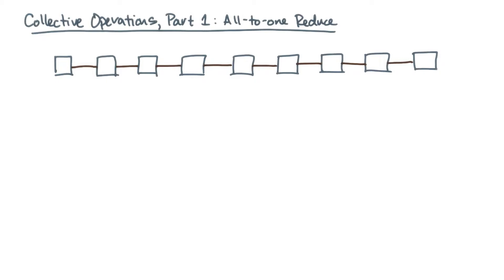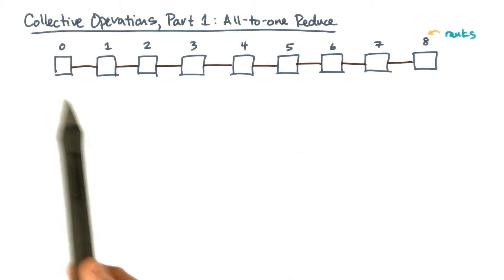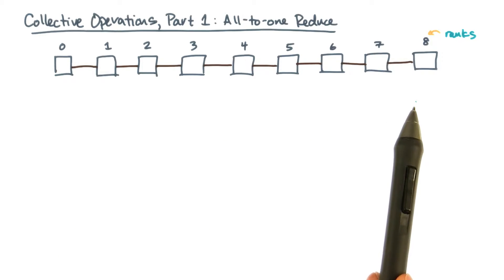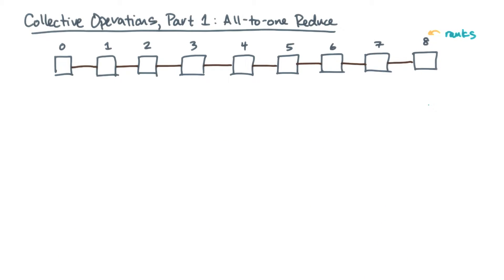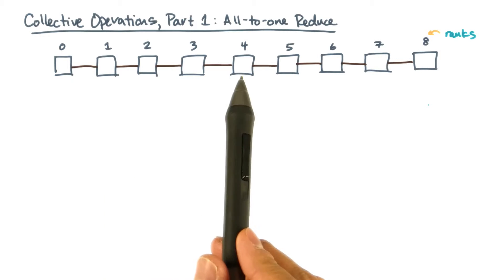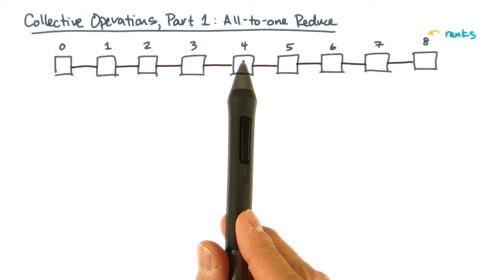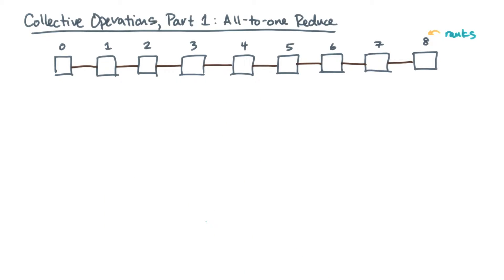Consider this linear network, which I've numbered from 0 to 8. These ID numbers I'll sometimes call ranks. So for example, the rank of this node is 4. Now suppose each node has a single value in its private memory.